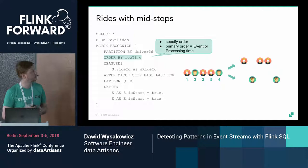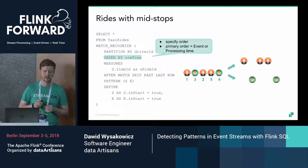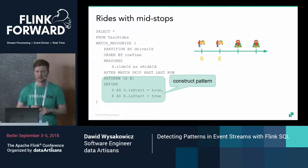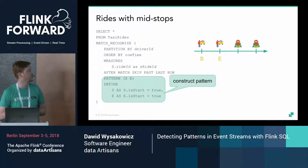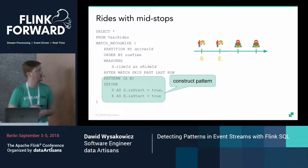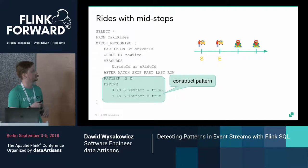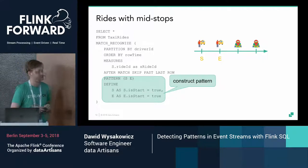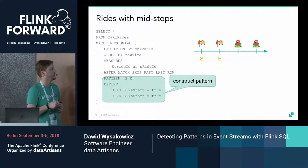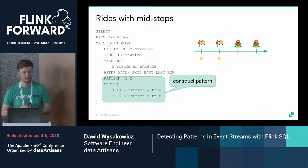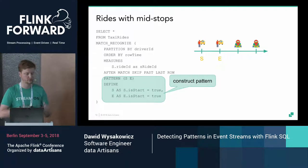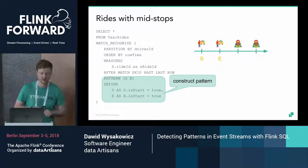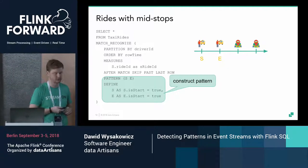That's essentially preconfiguration of our stream. After that, we go to the most interesting part: constructing the pattern we're looking for. We provide a pattern consisting of two variables — the names can be arbitrary. Here, S stands for start and E for the end event of our pattern. For those variables, we later provide conditions that an event must fulfill to be considered matching that part of the pattern.